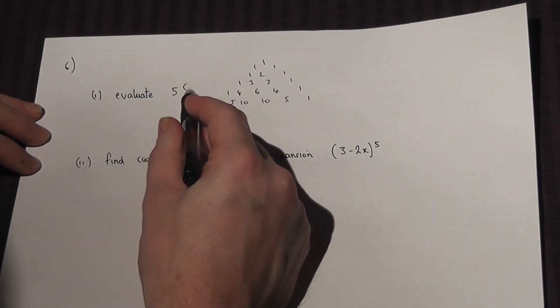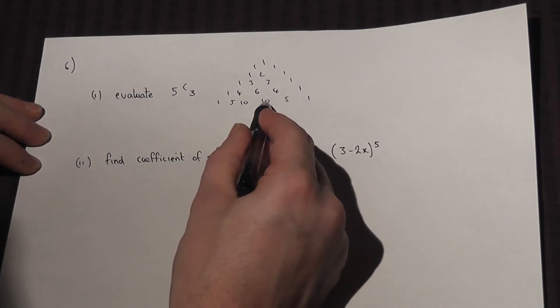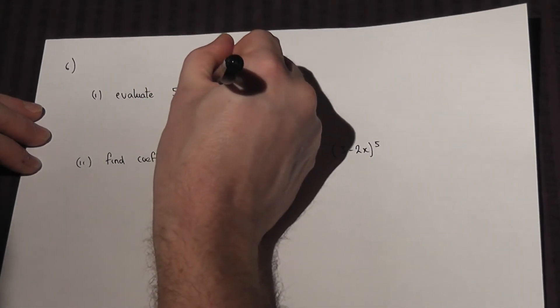Then 5C3, that's 5C0, 5C1, 5C2, so that number there is 5C3, that's 5C4, that's 5C5, so that number equals 10.